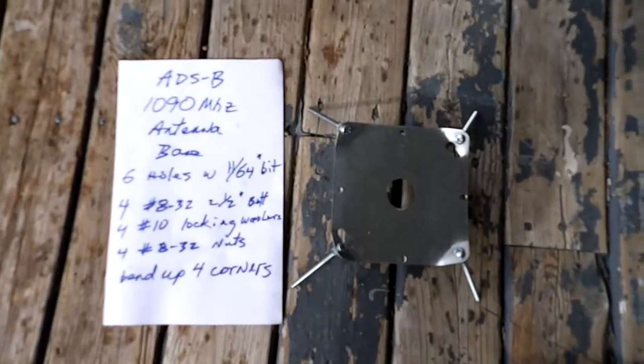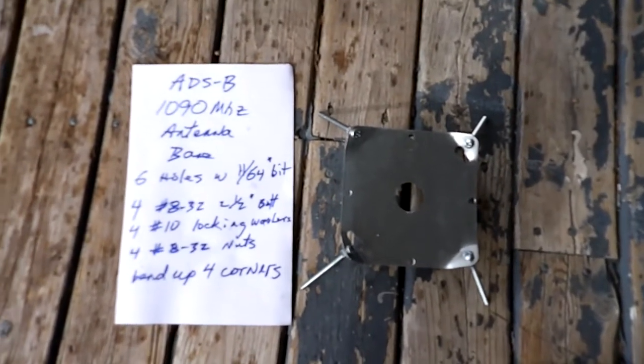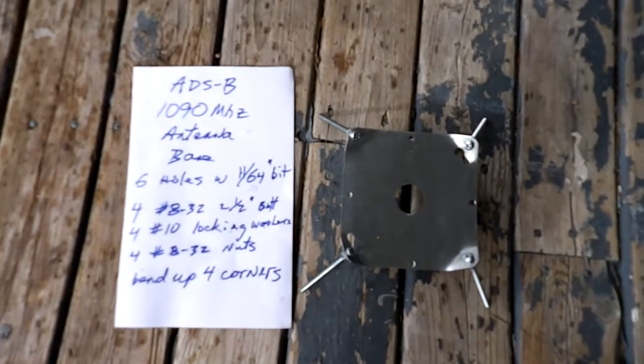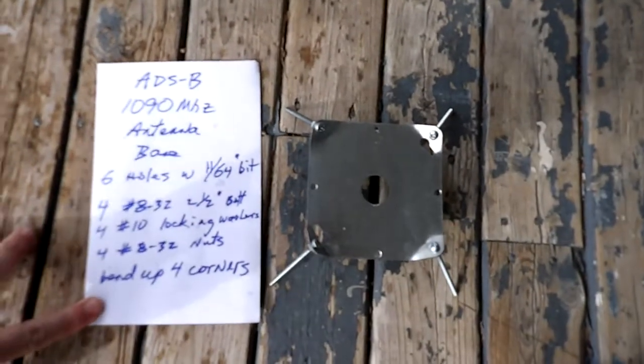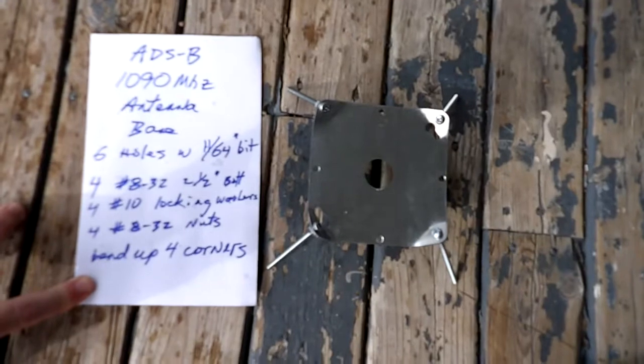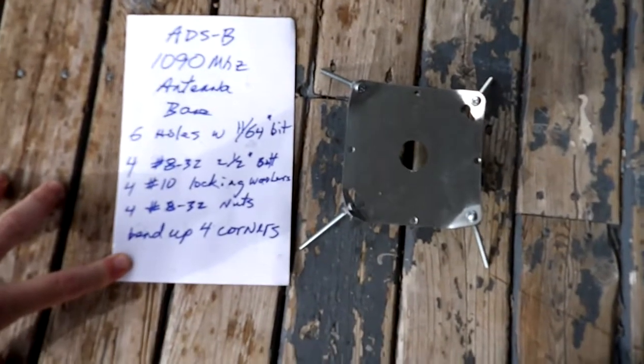Here's another high production value do-it-yourself video. This is for an ADS-B 1090 megahertz antenna ground plane base.